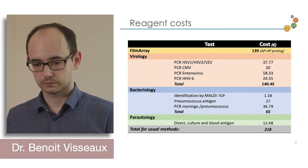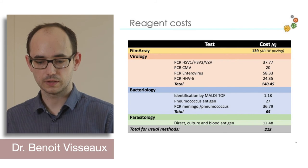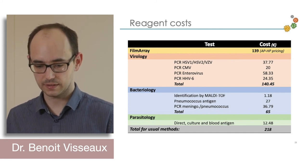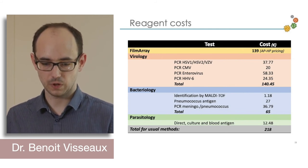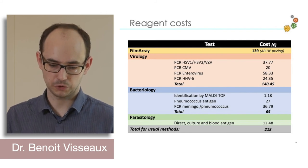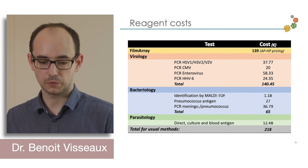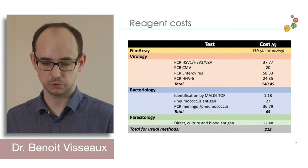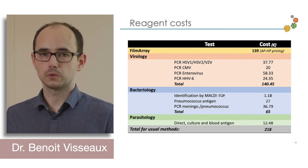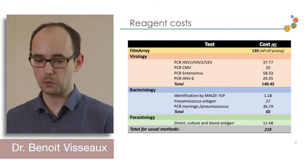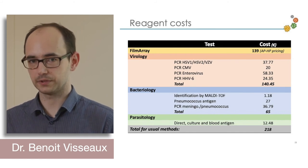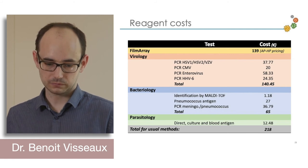Regarding reagent cost: the FilmArray ME panel costs 140 euros in our hospital. Adding up the costs of all reagents it replaces — PCR for HSV-1, HSV-2, VZV, CMV, enteroviruses, HHV-6, bacteriology identification by MALDI-TOF, pneumococcus antigen, PCR for pneumococcus, and for parasitology: direct exam and culture for cryptococcus neoformans — totals a little more than 200 euros. The ME panel cost is lower, though this comparison is slightly skewed since not every test is performed for every patient. Globally, the cost is about the same.